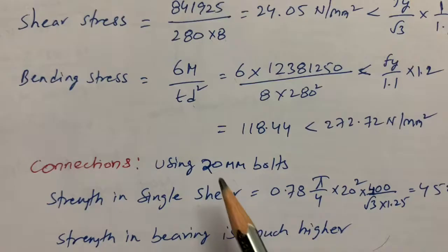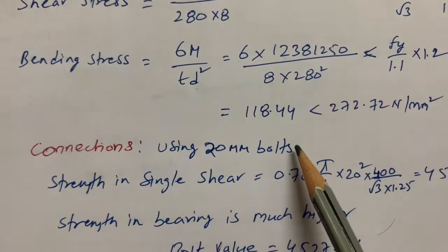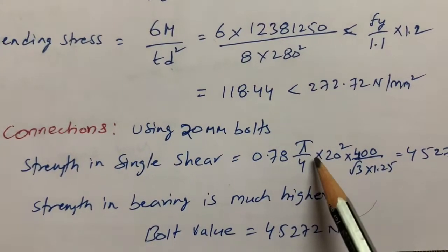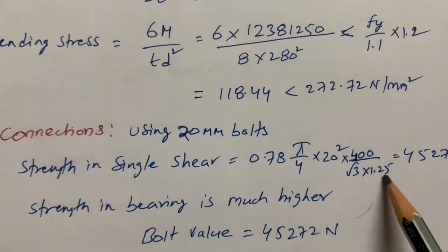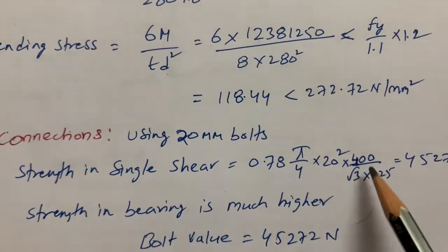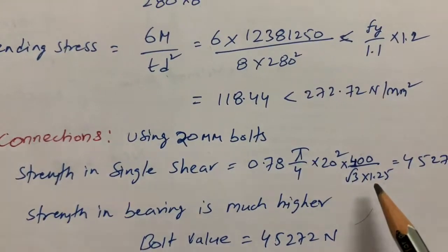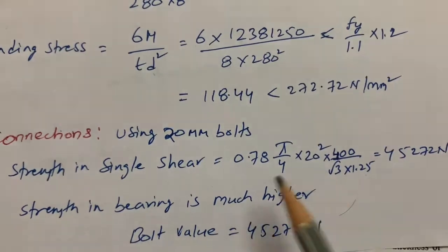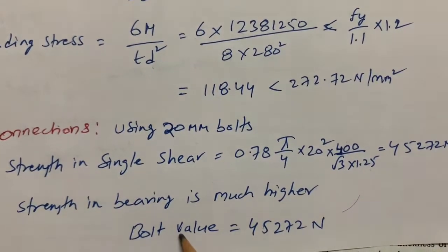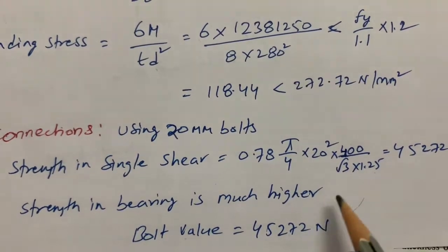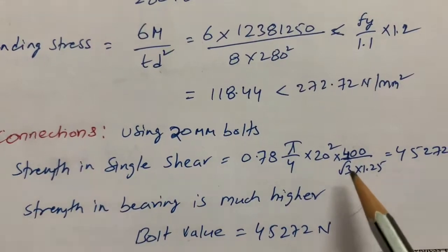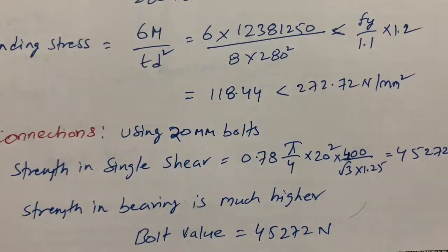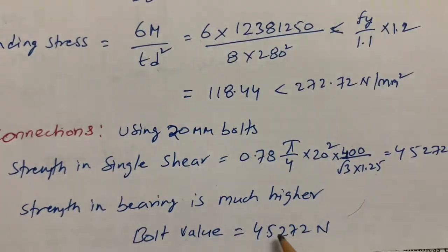To connect the batten plates by bolting, I use 20 mm bolts. For the threaded portion, the shear capacity = 0.78 × (π/4) × d² × (f_ub / (√3 × γ_mb)), where f_ub = 400 MPa and γ_mb = 1.25 (partial safety factor from the code). I get 45,272 N per bolt. Since bearing capacity is much higher, I take the bolt design value as 45,272 N (the lesser value governs).